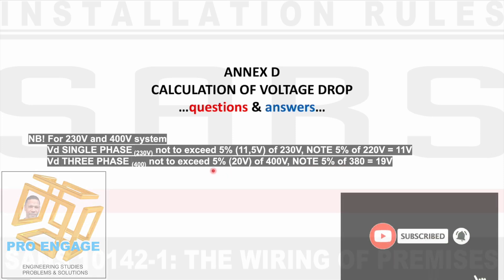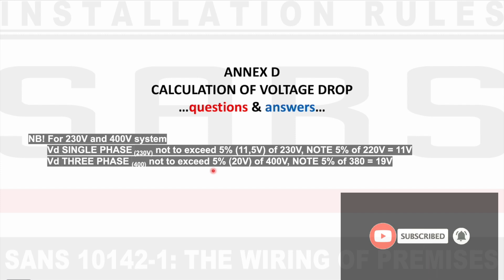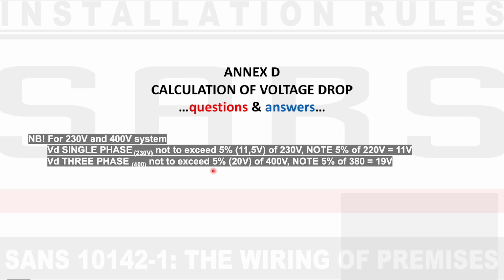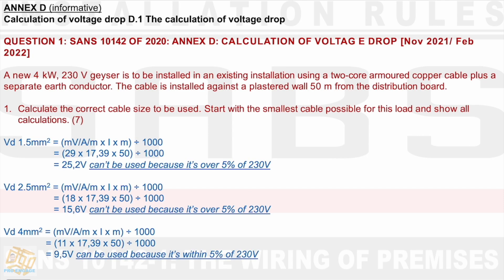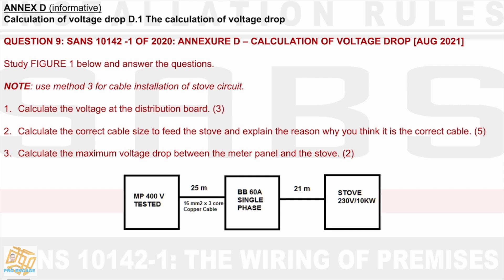This is important information that we will use in some of our calculations almost every time when they ask for a reason or substantiate your answer. We move on to our next question — Question 9, which has sub-questions 9.1, 9.2, and 9.3. Study figure 1 below and answer the questions. Note: use method 3 for cable installation of the stove circuit. Method 3 is cables buried in the ground.